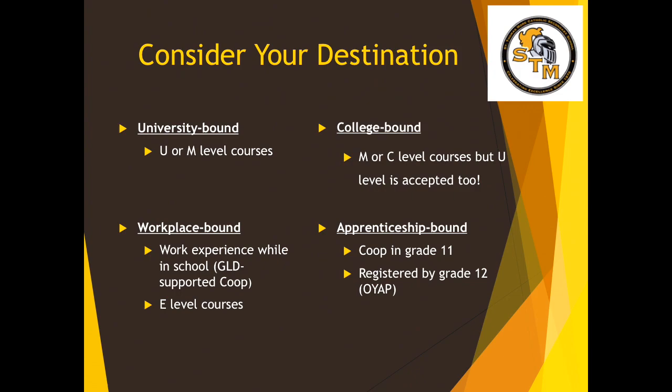Consider your destination. If you're university bound, this will require U or M level courses. If you're college bound, you will need C level courses and possibly the 3M math depending upon program choices. If you're workplace bound, this will require E level courses, and you might want to consider supported co-op. And if you're apprenticeship bound, get connected with our co-op teachers and guidance — that would be Mrs. Stocko, Mrs. Susie, and Mrs. D'Alessio.